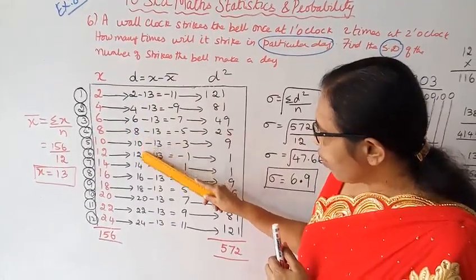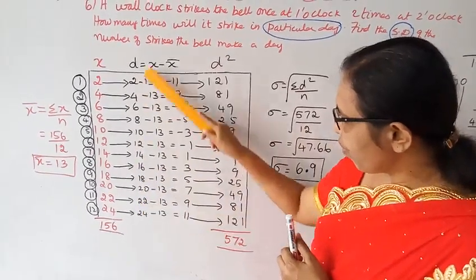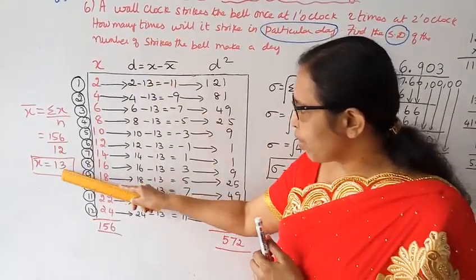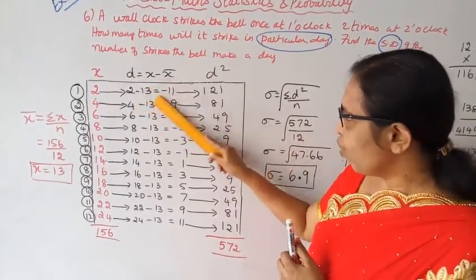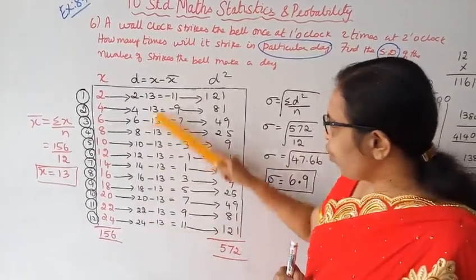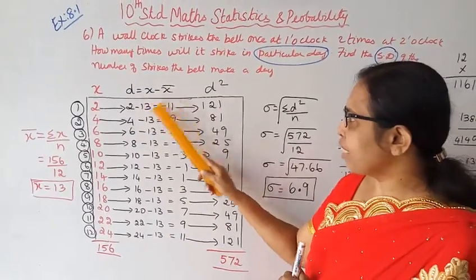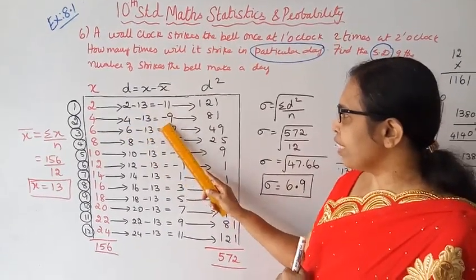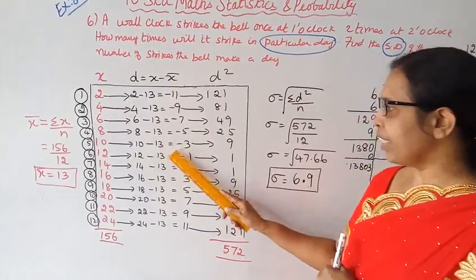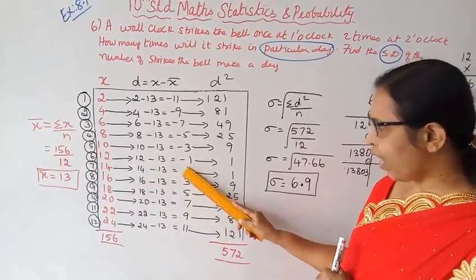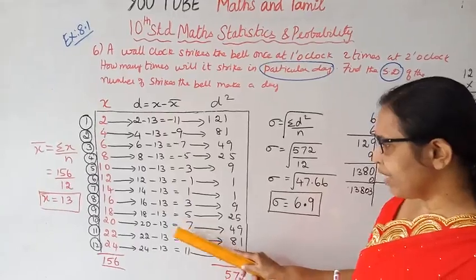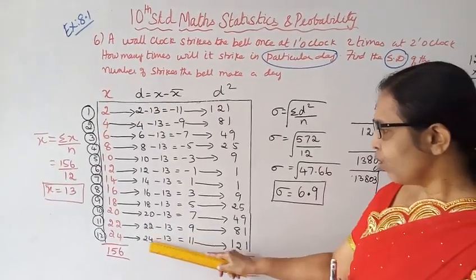Now we calculate d = X minus X-bar, where X-bar is 13. So: 2 minus 13 = minus 11; 4 minus 13 = minus 9; 6 minus 13 = minus 7; 8 minus 13 = minus 5; 10 minus 13 = minus 3; 12 minus 13 = minus 1; 14 minus 13 = plus 1; 16 minus 13 = 3; 18 minus 13 = plus 5; 20 minus 13 = plus 7; 22 minus 13 = 9; 24 minus 13 = 11.